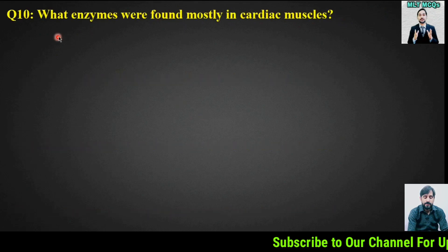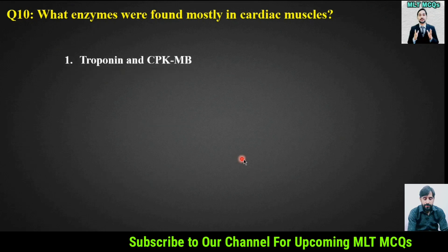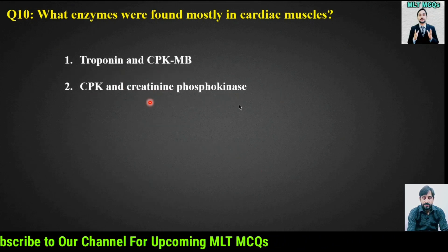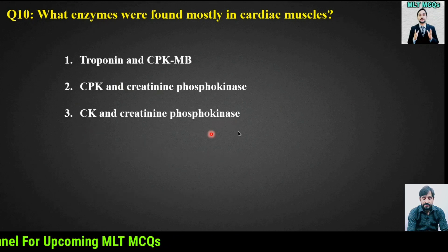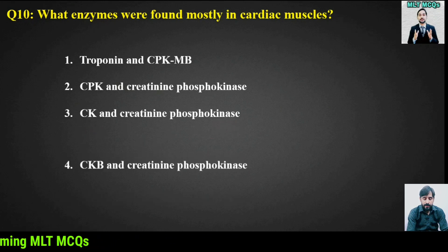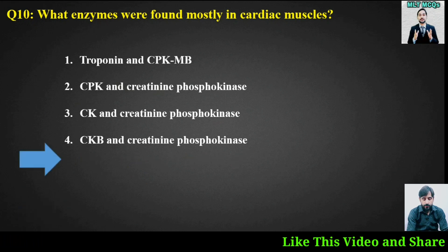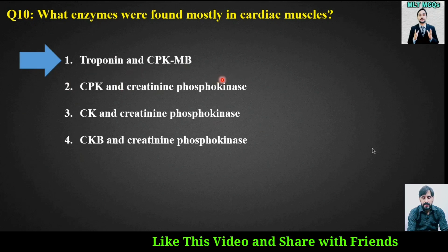MCQ number 10: What enzymes are found mostly in cardiac muscles? Options are: troponin and CPK-MB; CPK and creatine phosphokinase; CK and creatine phosphokinase; or CKB and creatine phosphokinase. The right answer is option 1 — troponin and CPK-MB.